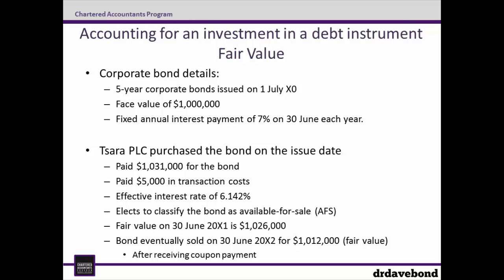This is important as it affects the way in which the bond is accounted for. The fair value of the bond on the 30th of June X1 is given at $1,026,000. SARA then sells the bond on the 30th of June X2 for $1,012,000 after receiving the coupon payment. This sale price is assumed to be at fair value.